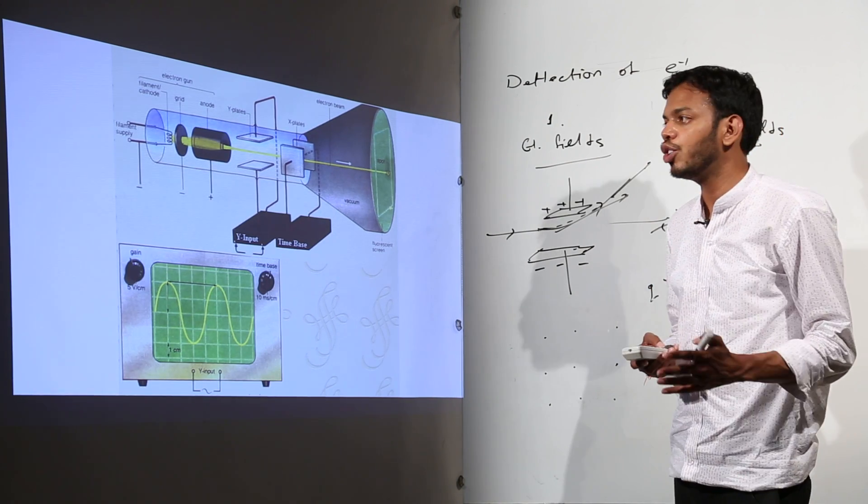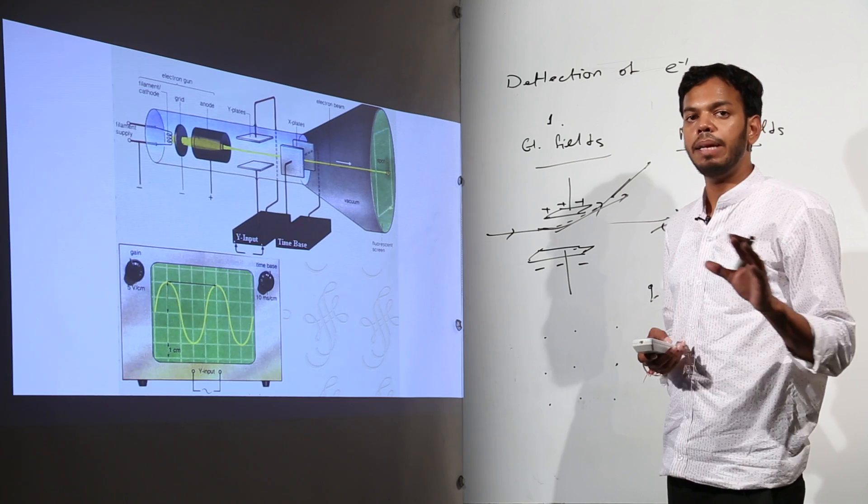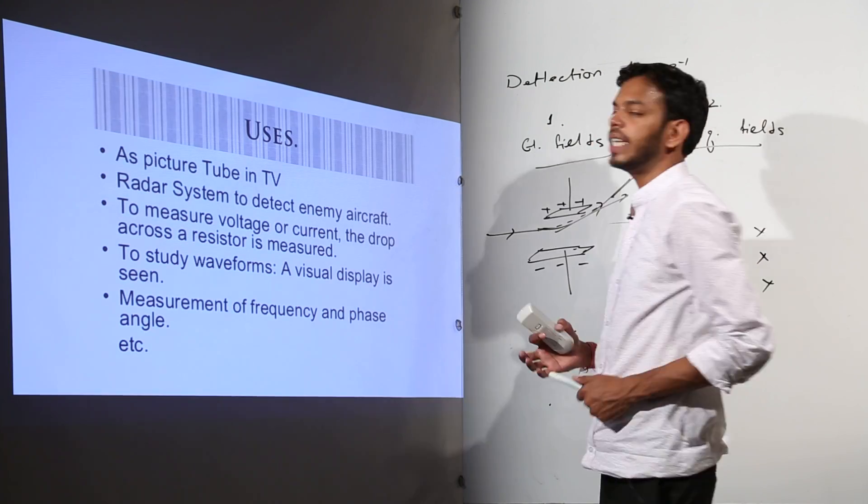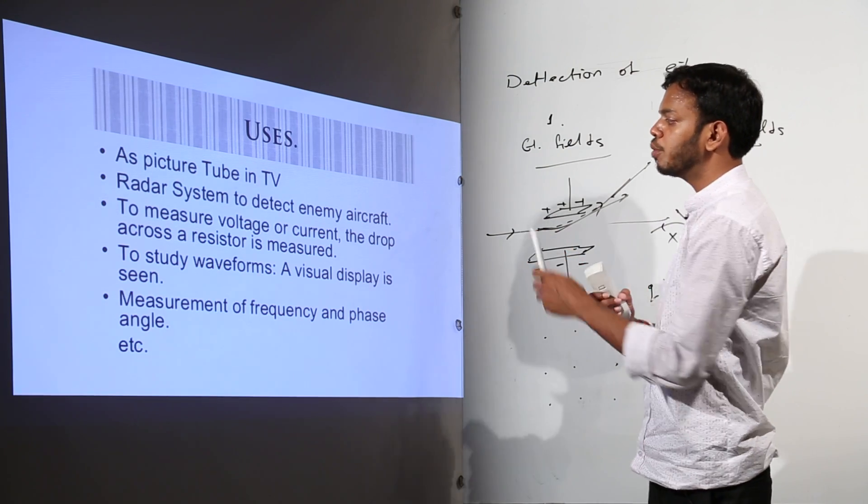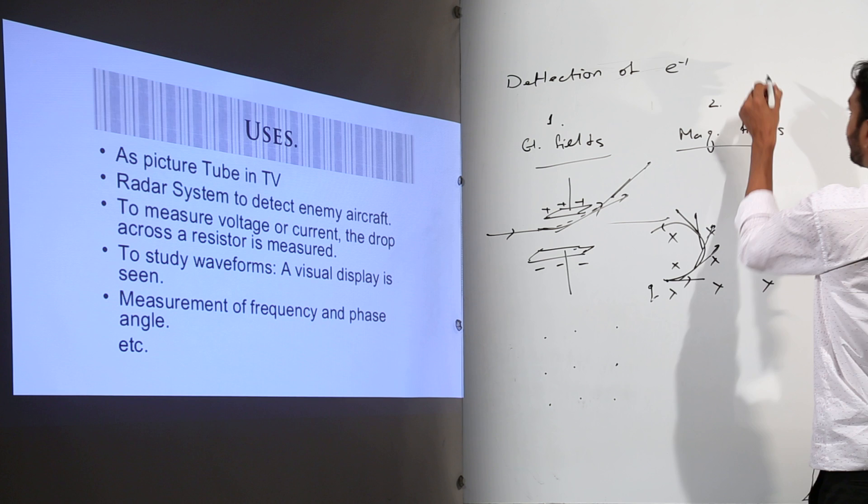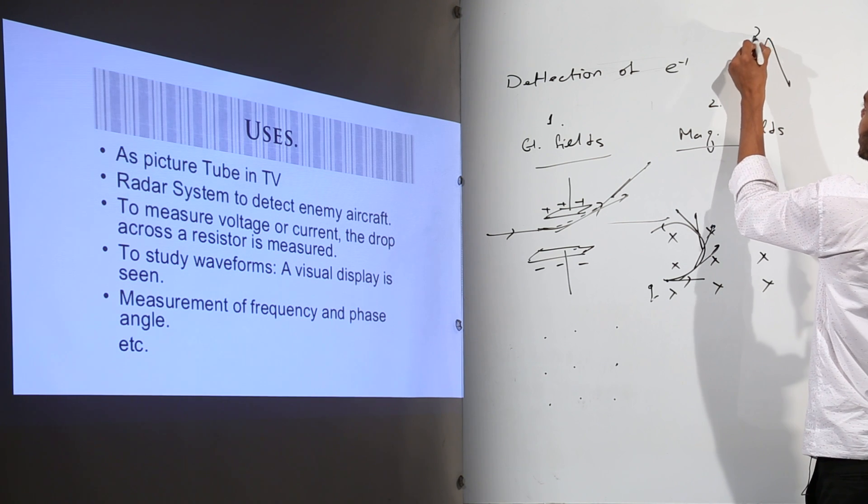Now why do we study cathode ray tube? Because of its many usage but the most important uses are first of all picture tube in television, then radar system to detect enemy aircraft because if this is a mountain, there is this radar here.